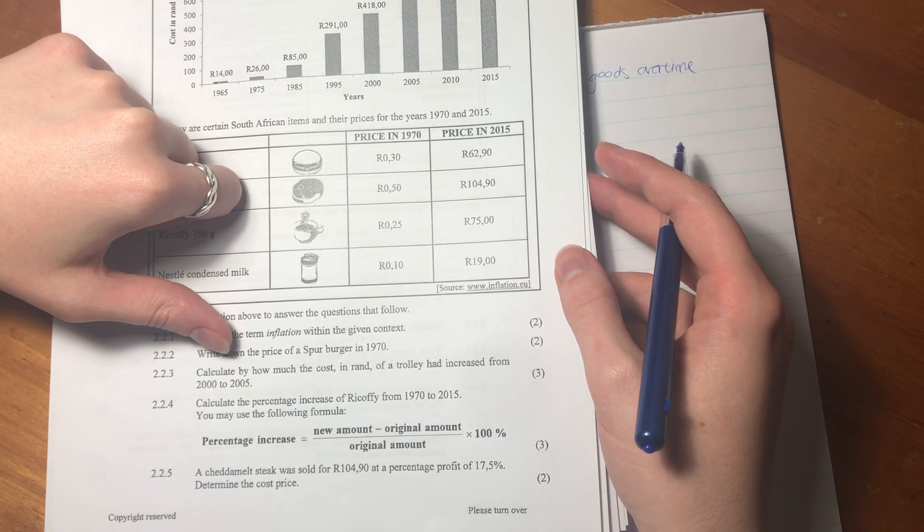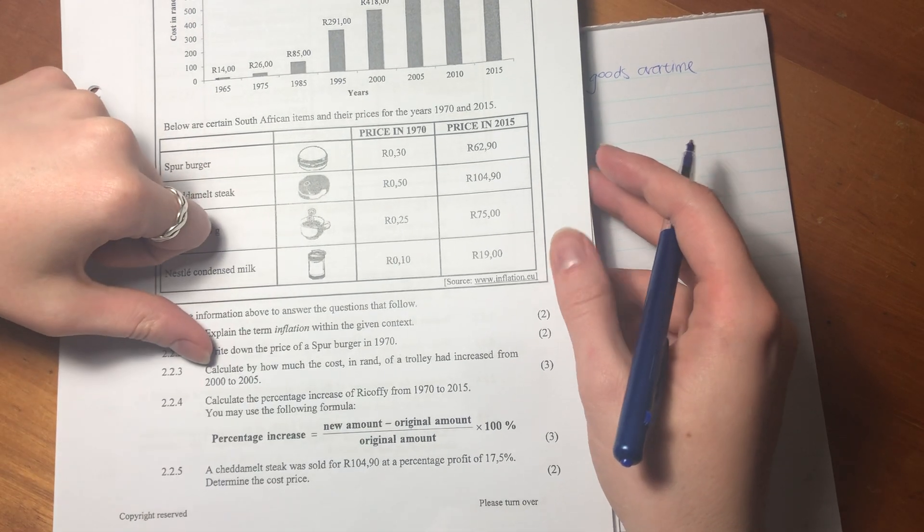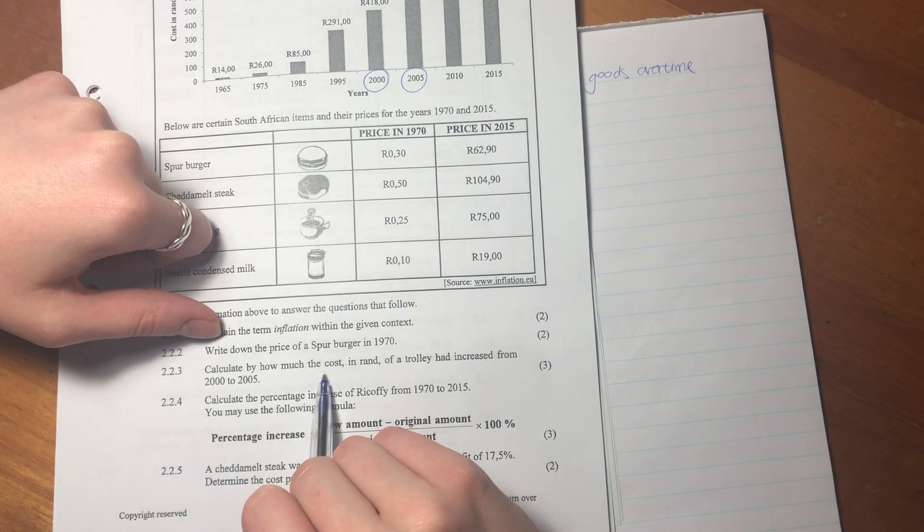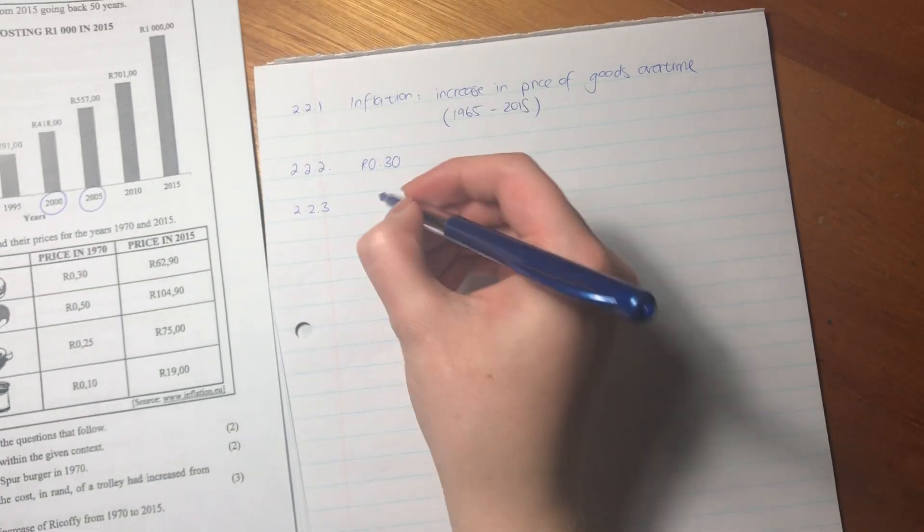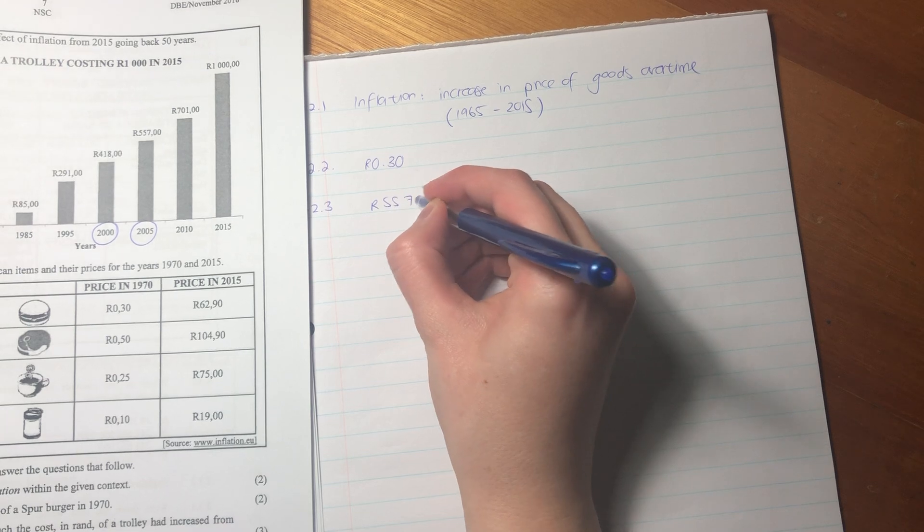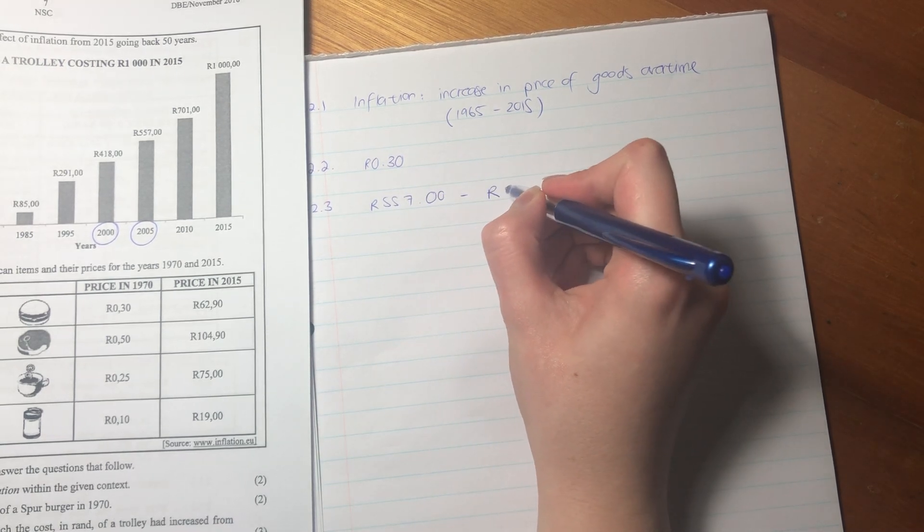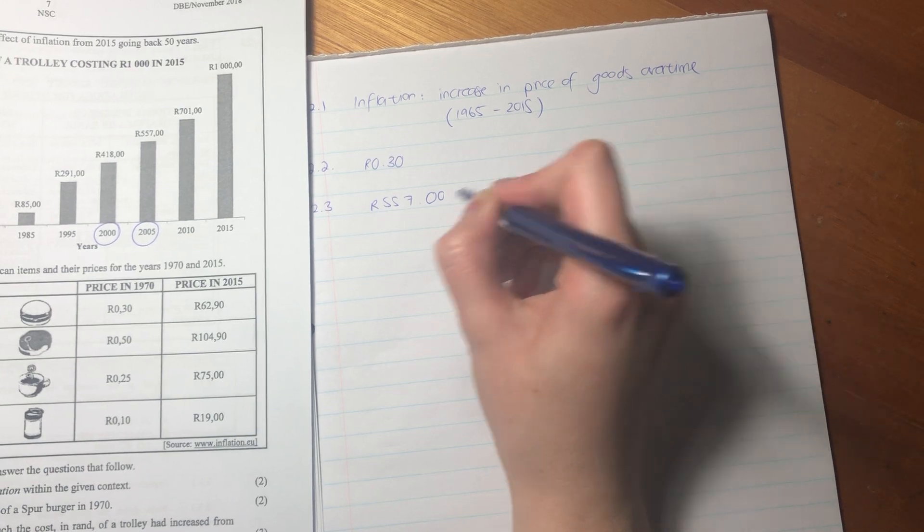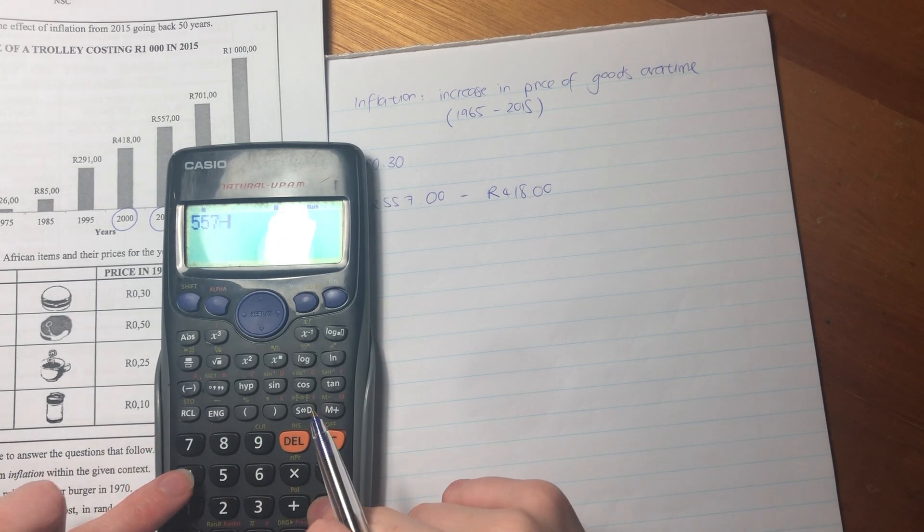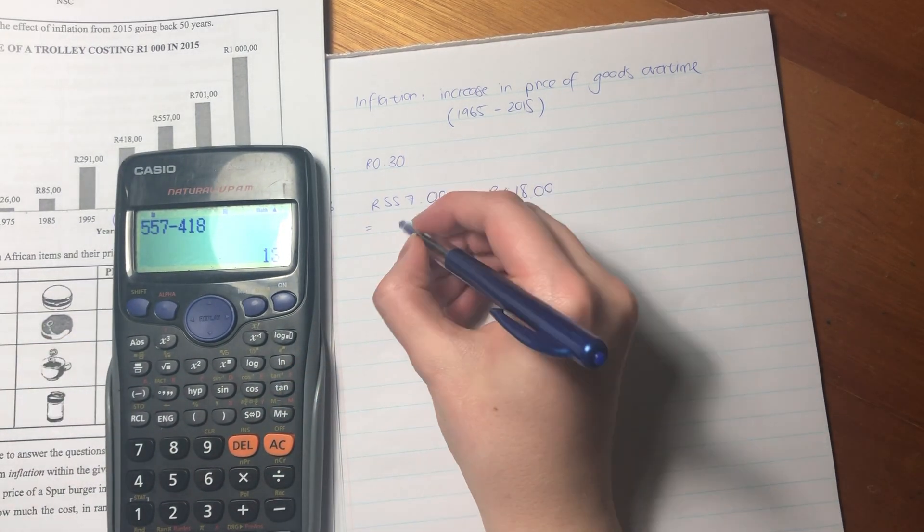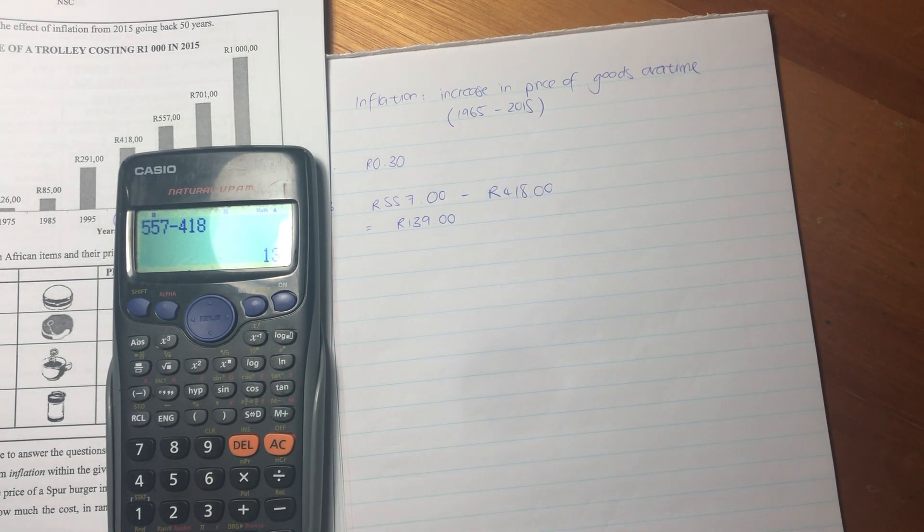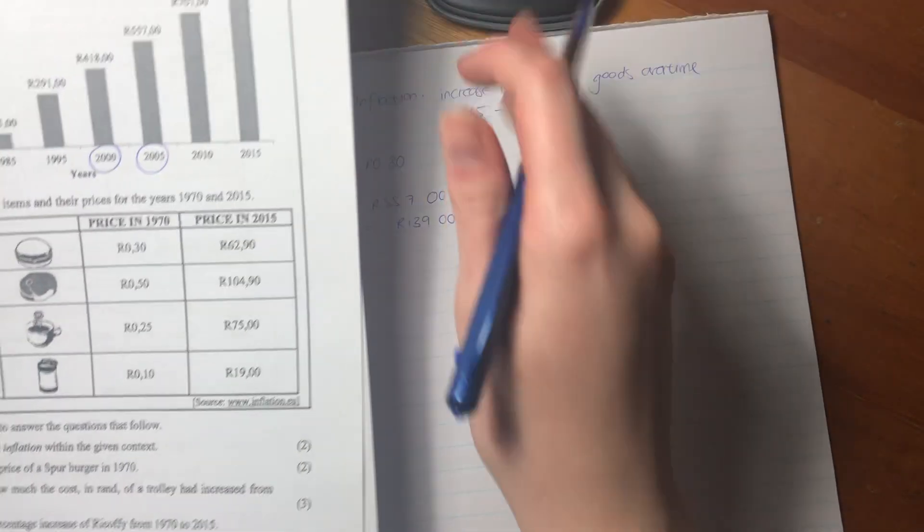Let's now see what's happening here. It says calculate by how much the cost in RAND of a trolley has increased from 2000 to 2005. So we're going to say, in 2005 it was R557.00, and in 2000 it was R418. So the difference, 557 minus 418, is 139 RAND. So we are making good progress.